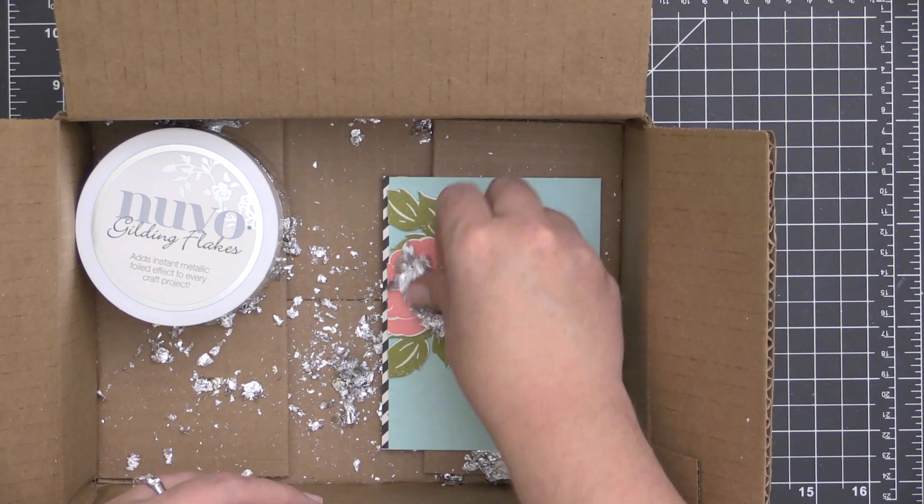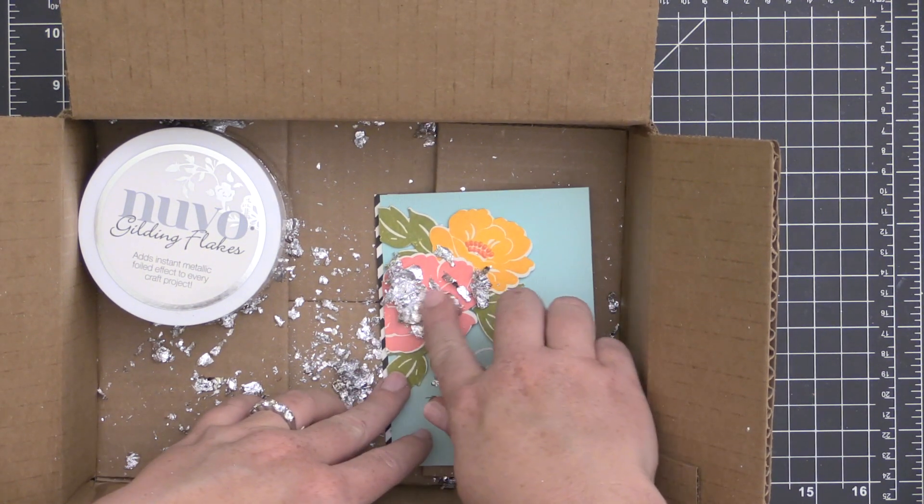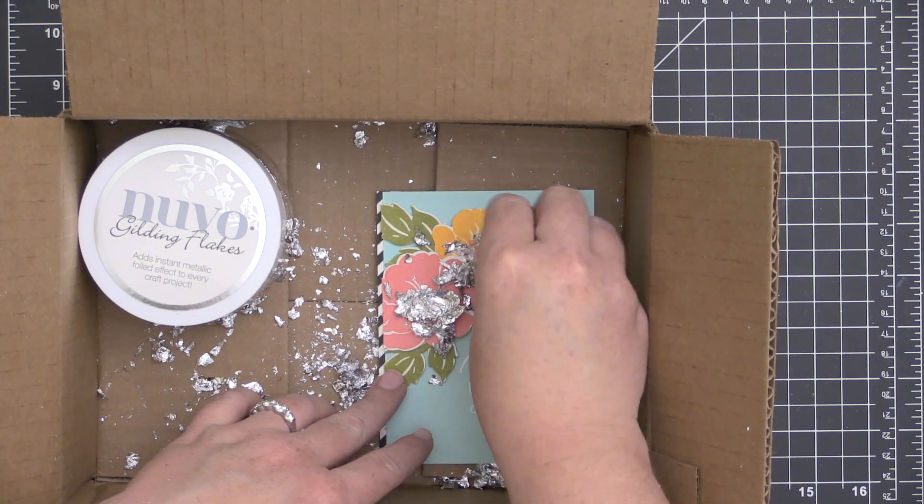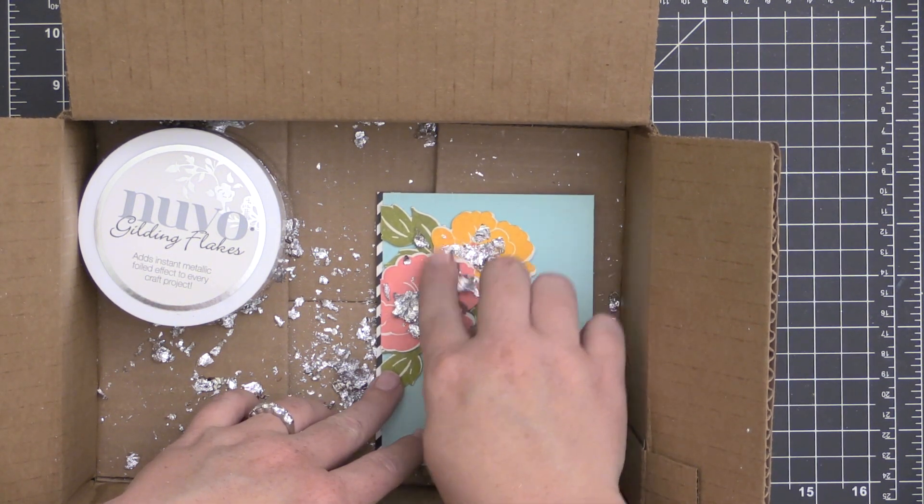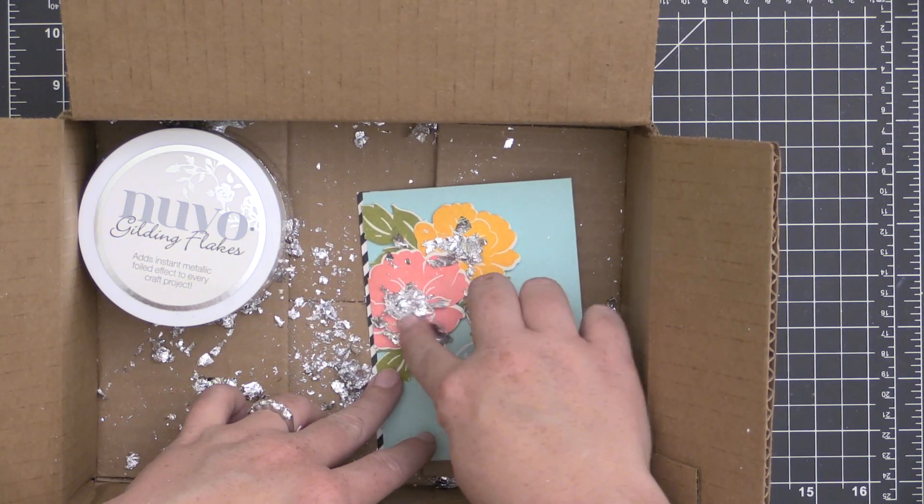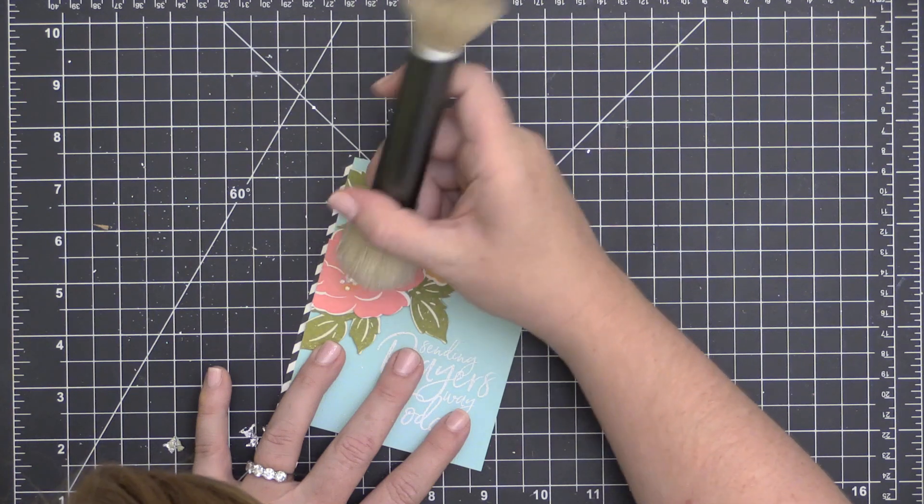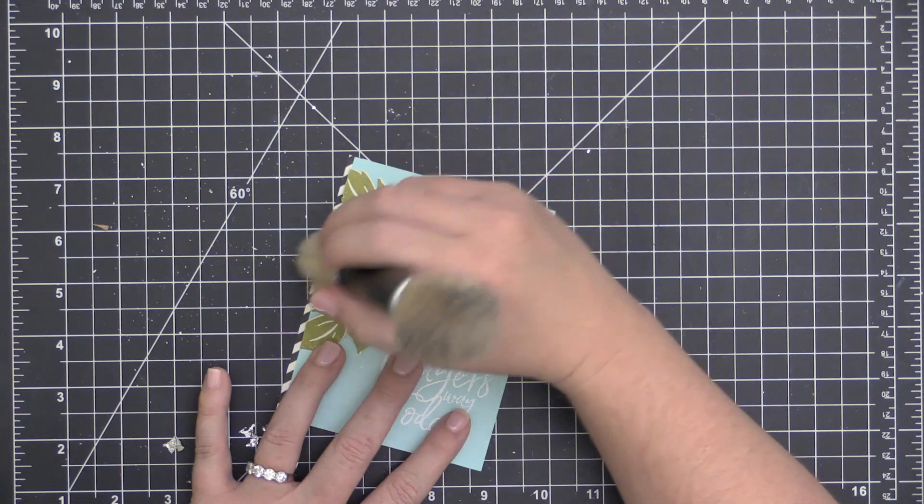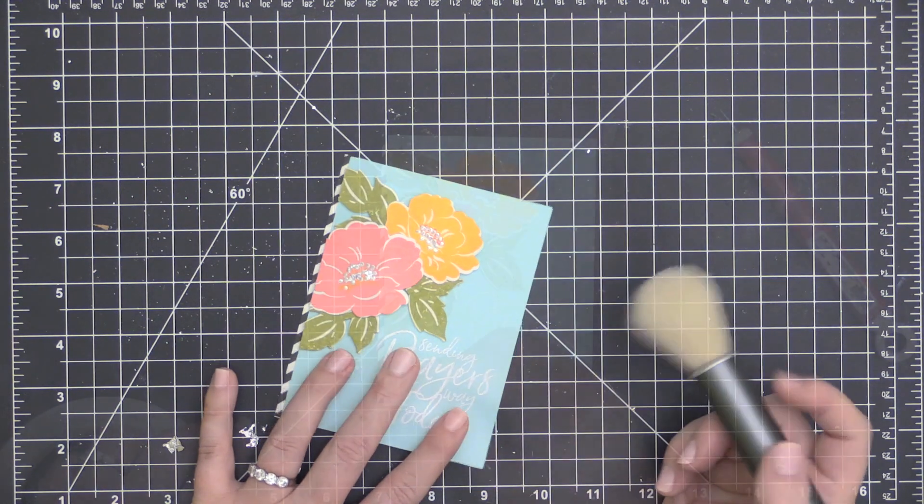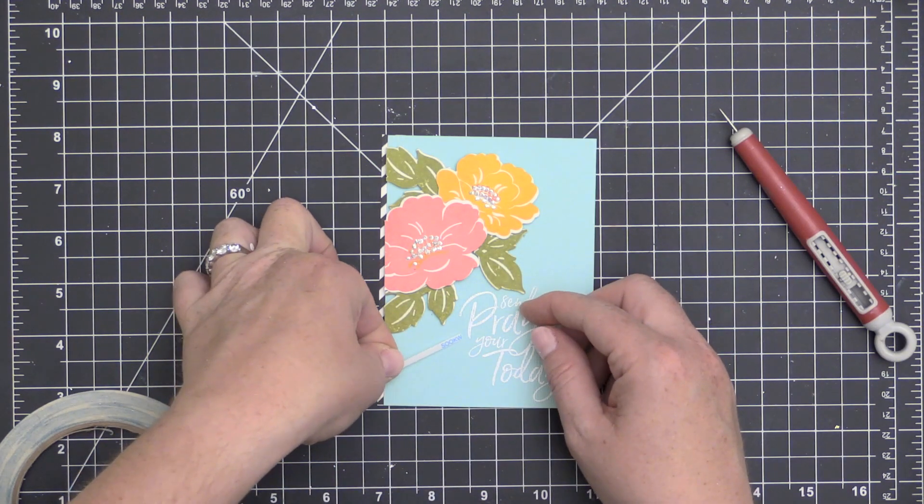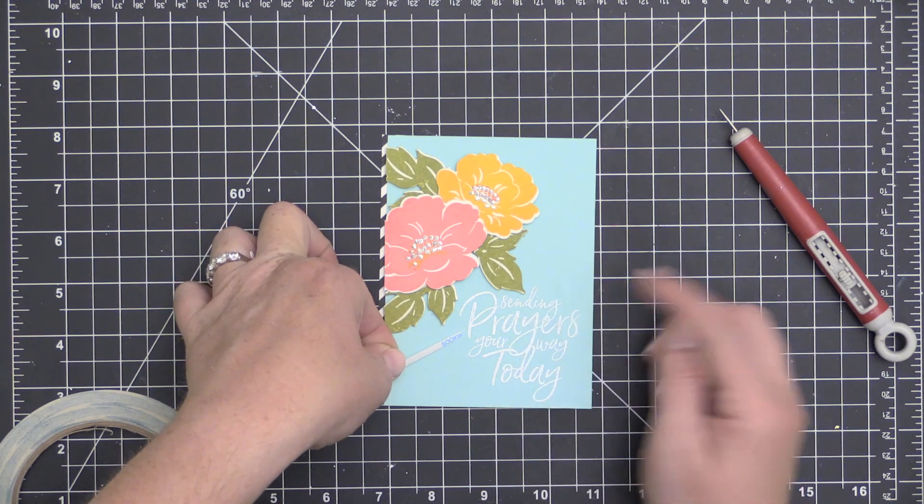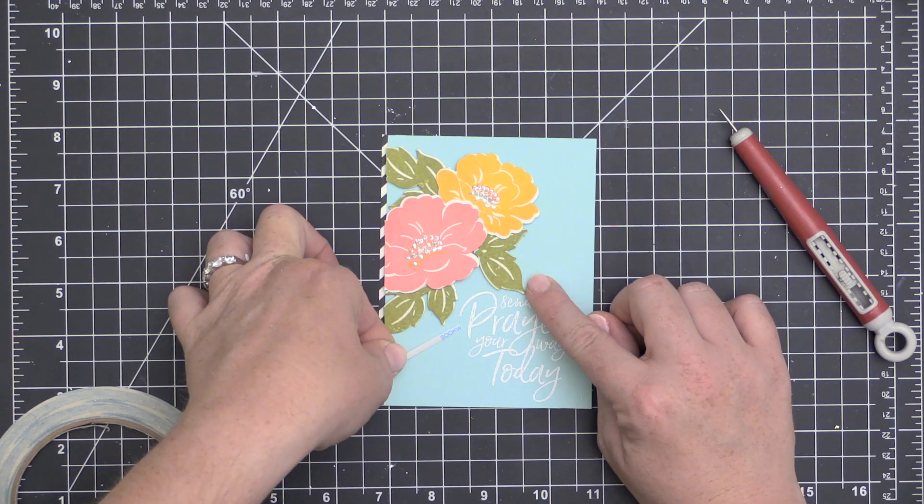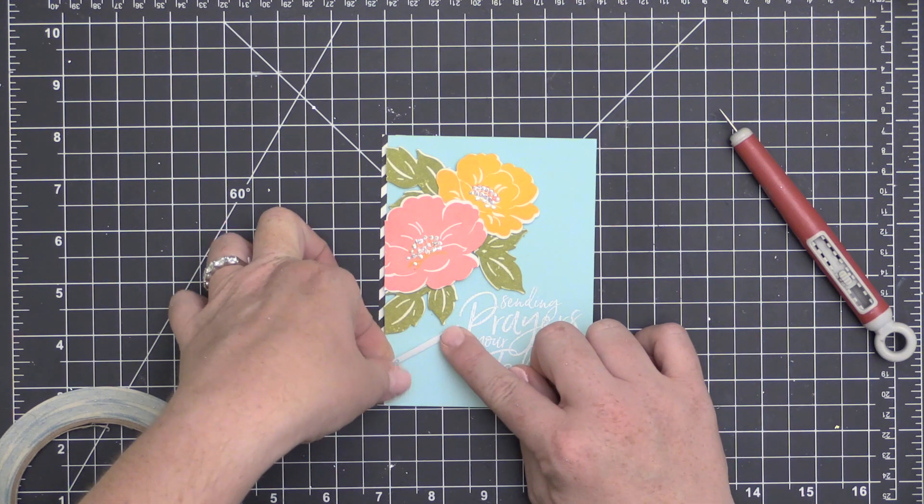Now the second way to add these flakes to your card project is to use a glue pen. And I use the Zig Two-Way Glue Pen for this today because it dries tacky. Once I allowed the glue to dry onto the project, then I took my project over to the box and I pressed those flakes into the adhesive once again. And I'm left with these little faux tin polka dots or dots on the middle of the stamen of the flower. That's what they're called, right? The stamen. And then once again, I use that stiff brush to kind of push away the excess and break off the edges of those flakes that were overhanging.